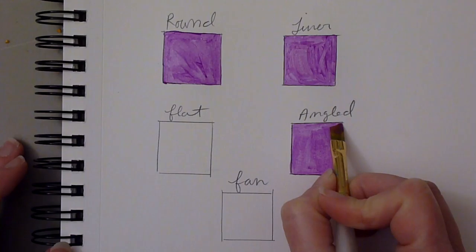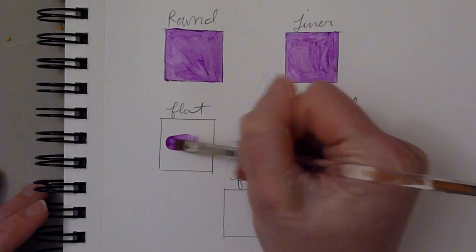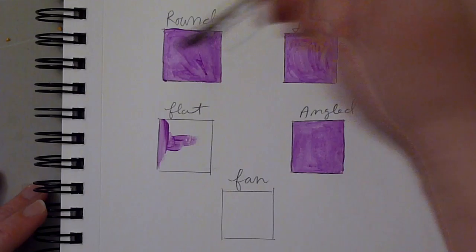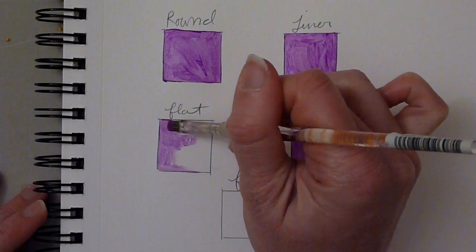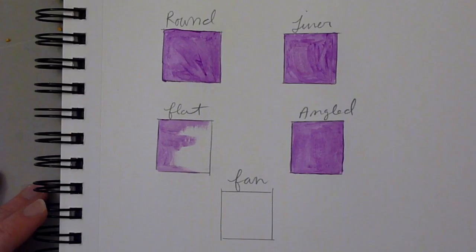The angled brush, depending on the size of the brush and the size of the area you're trying to cover, can be good for covering large areas. It can also be used, similar to a flat brush, to get some lines, some straight lines, some clean lines. And the little angled point can help you get into some tighter areas. It doesn't come with every brush set. It is a little more specialized, but it's a good brush to try out and practice with.